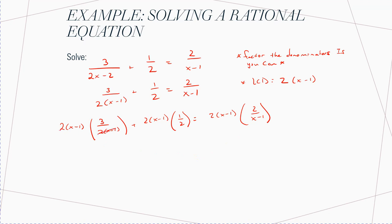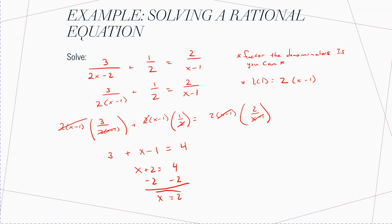Watch what happens: cancel, cancel — you're left with 3 plus the 2s cancel, leaving X minus 1 times 1, which is just X minus 1. On the right, X minus 1 cancels and 2 times 2 gives 4. So simplifying: 3 plus X minus 1 gives X plus 2 equals 4. Subtract 2 from each side and you're left with X equals 2. This works because the only restriction is X can't be 1, which would cause a divide by 0.